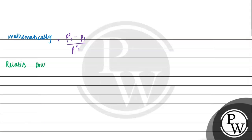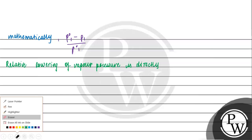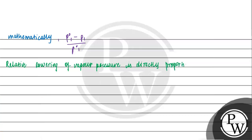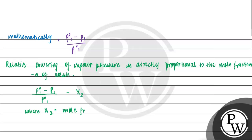Relative Lowering of Vapor Pressure is directly proportional to the mole fraction of the solute. So we can write the formula: P01 minus P1 divided by P01 is equal to x2, where x2 is the mole fraction of the solute.